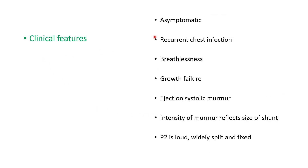Most ASD patients are asymptomatic until adult life, but in childhood there can be recurrent chest infections, breathlessness, and growth failure. There is an ejection systolic murmur because excessive blood flows through the pulmonary valve. There is no murmur directly due to the atrial septal defect, because the pressure difference between the atria is very small — only 1 to 2 mmHg.